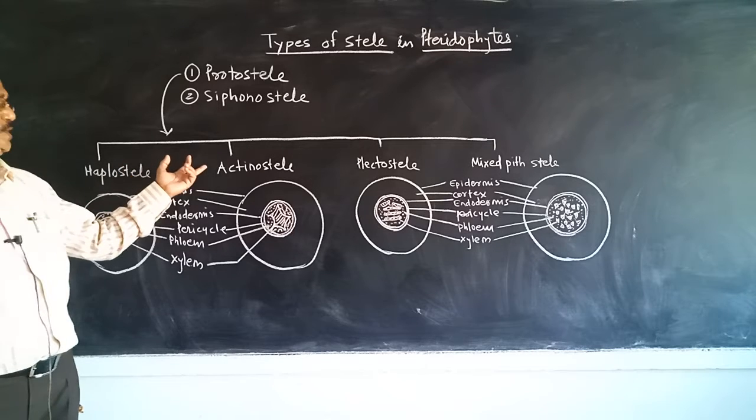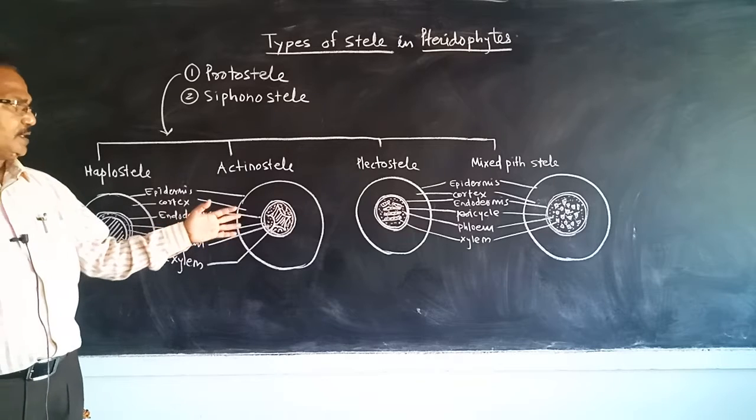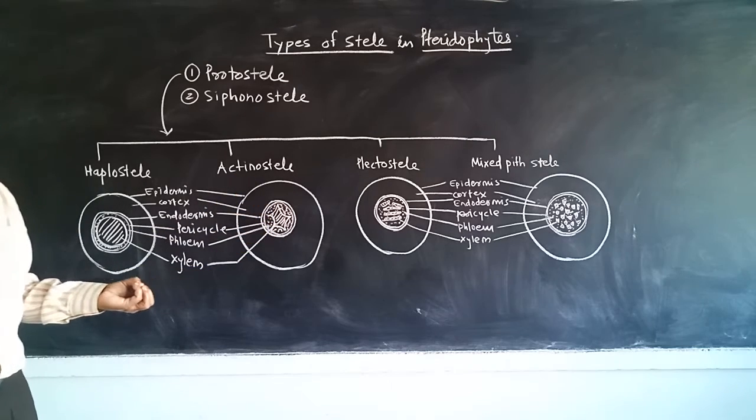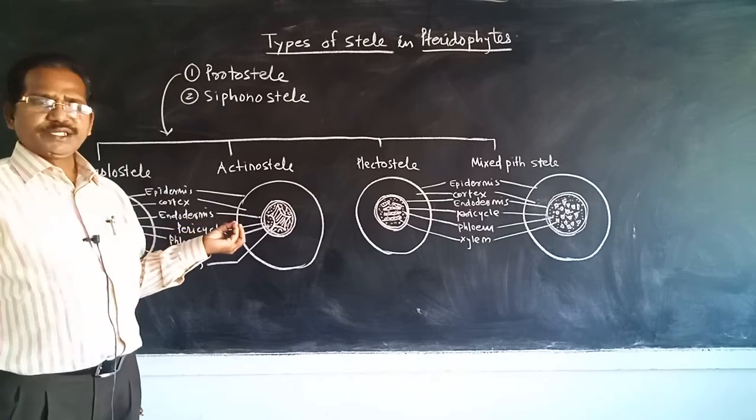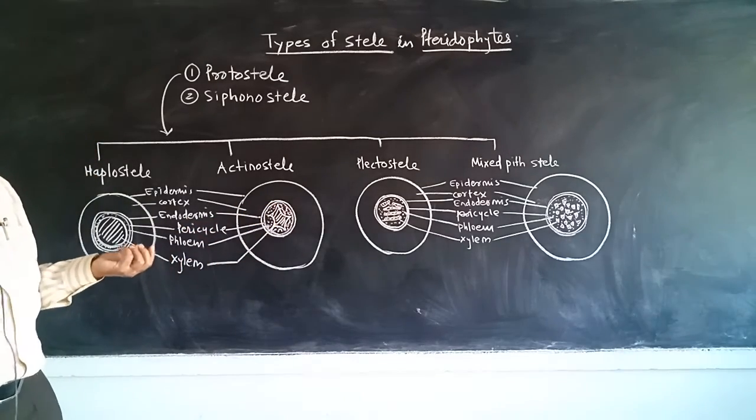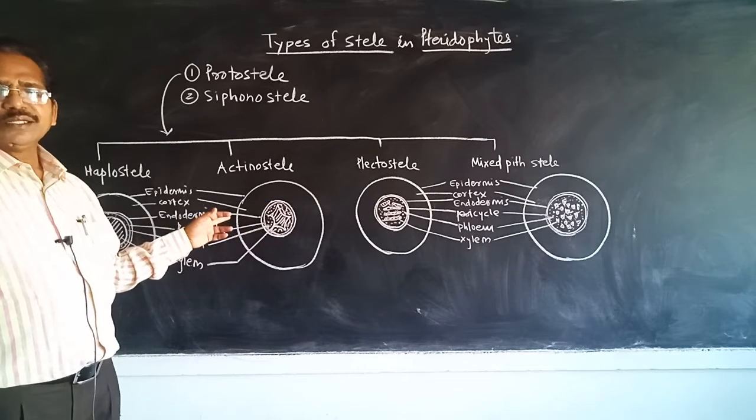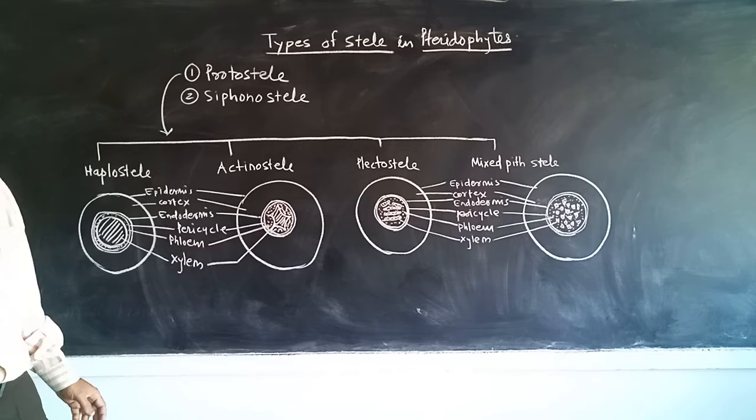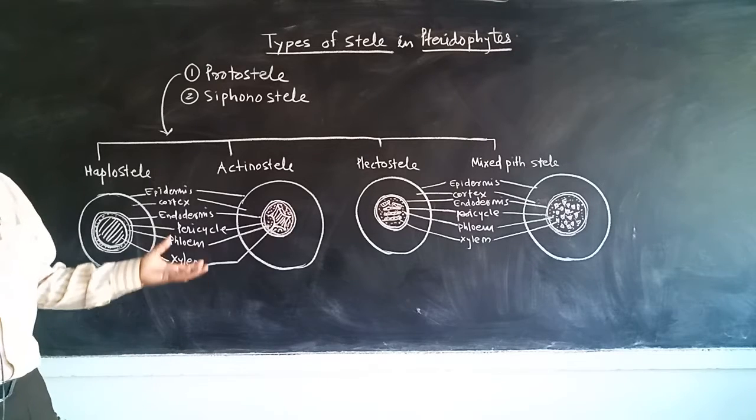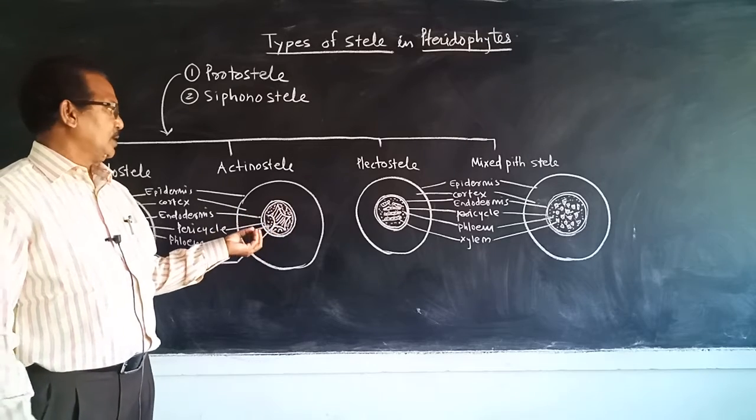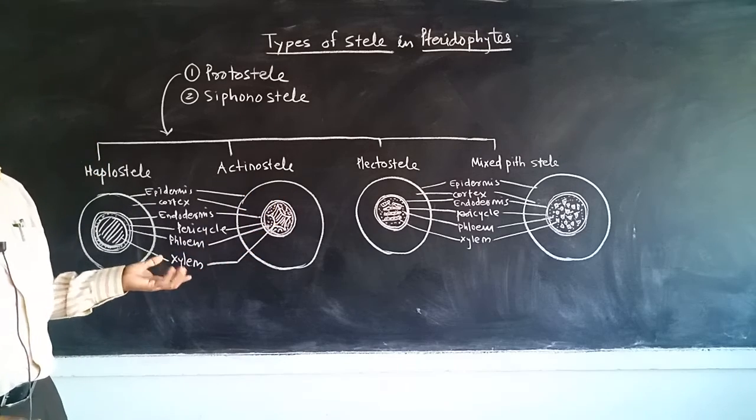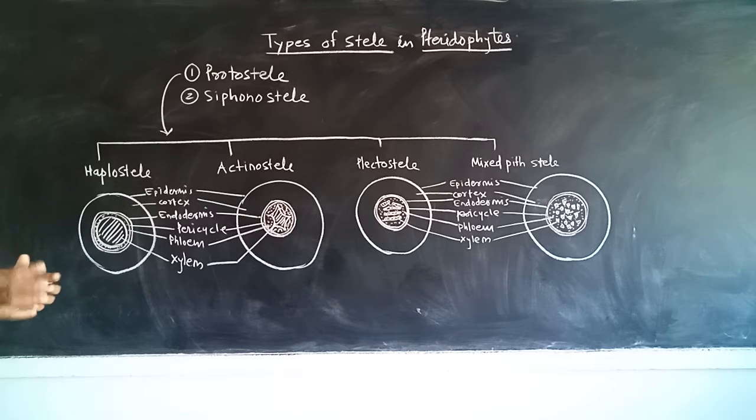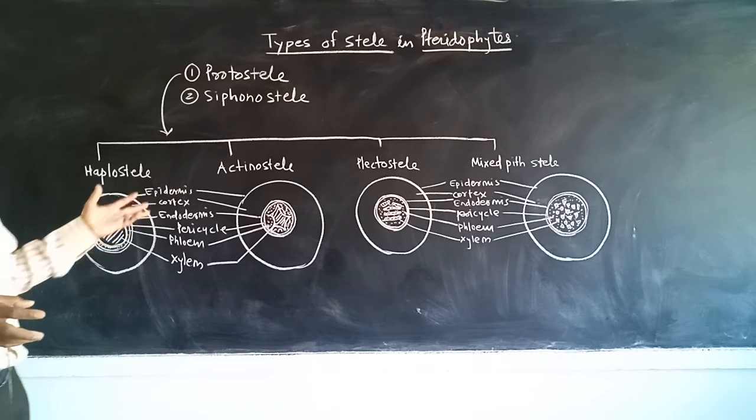Another type is actinostele, where the xylem element has radiating rib-like structures. That's why it appears star-shaped. The phloem which is present is in between the radiating arms or ribs, and it is followed by pericycle, then endodermis, then cortex, and then the outermost layer, epidermis.